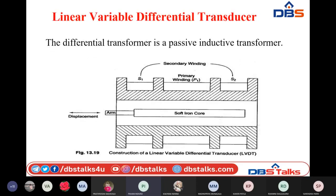Now we have another kind of transducer known as the Linear Variable Differential Transformer — LVDT — which is capable of finding displacement inductively. It is a modification of the inductive transducer with complete details. It is also known as a differential transformer and is a passive inductive transformer.